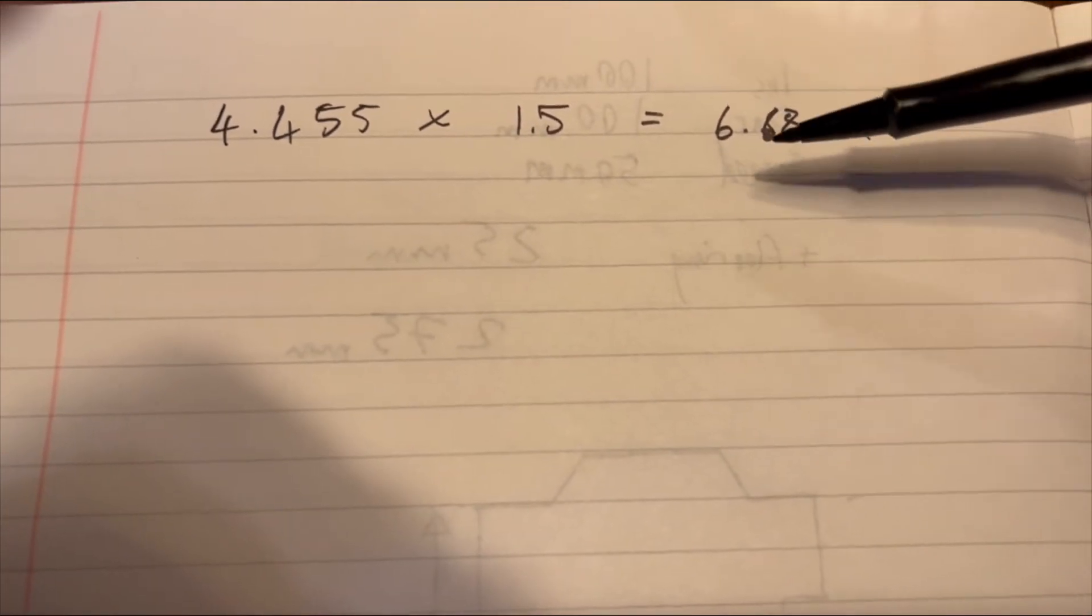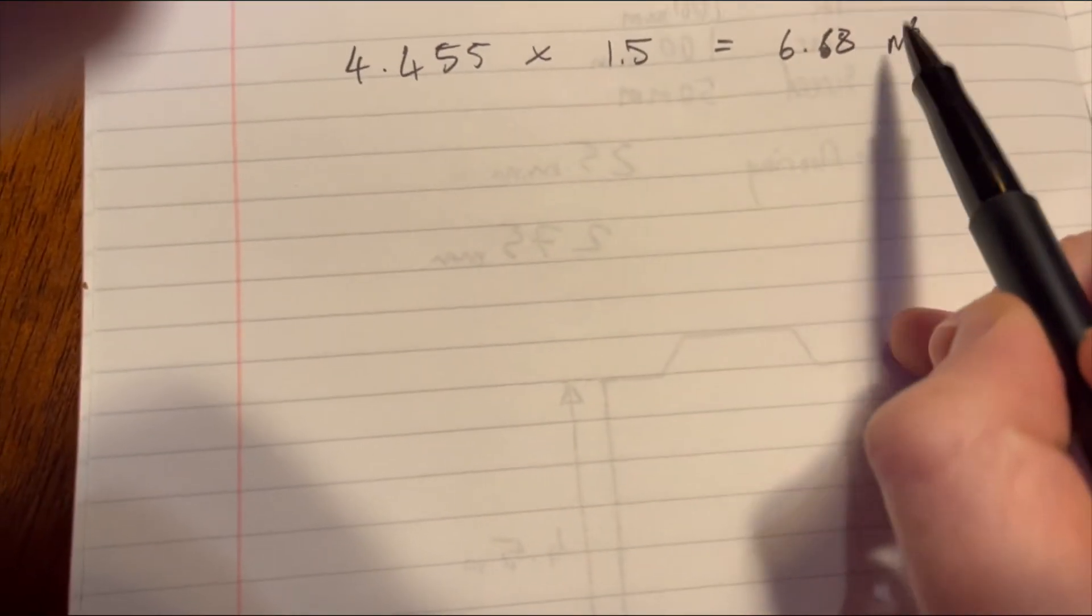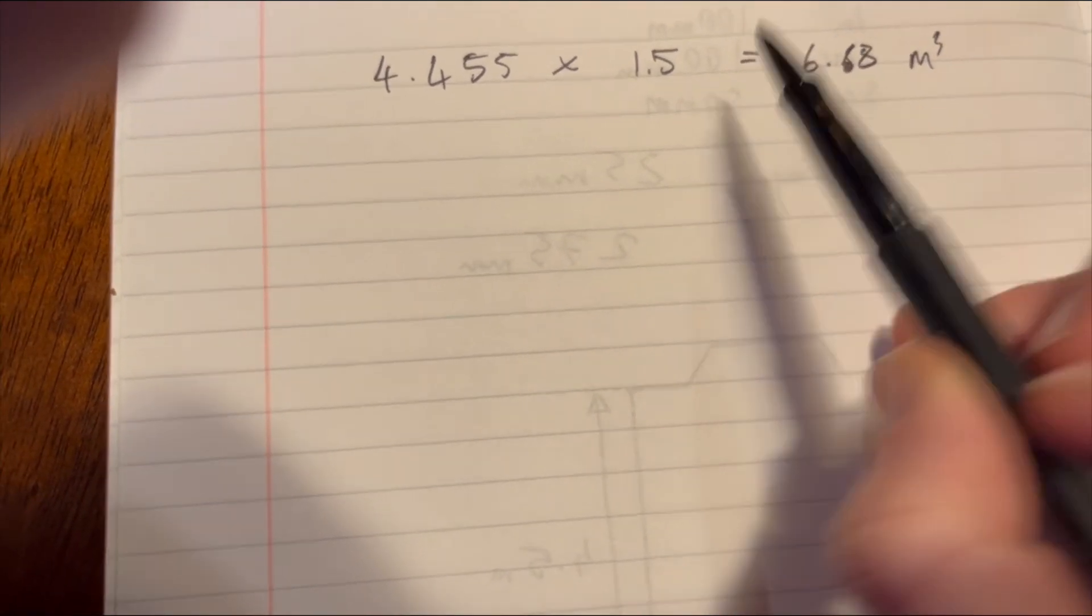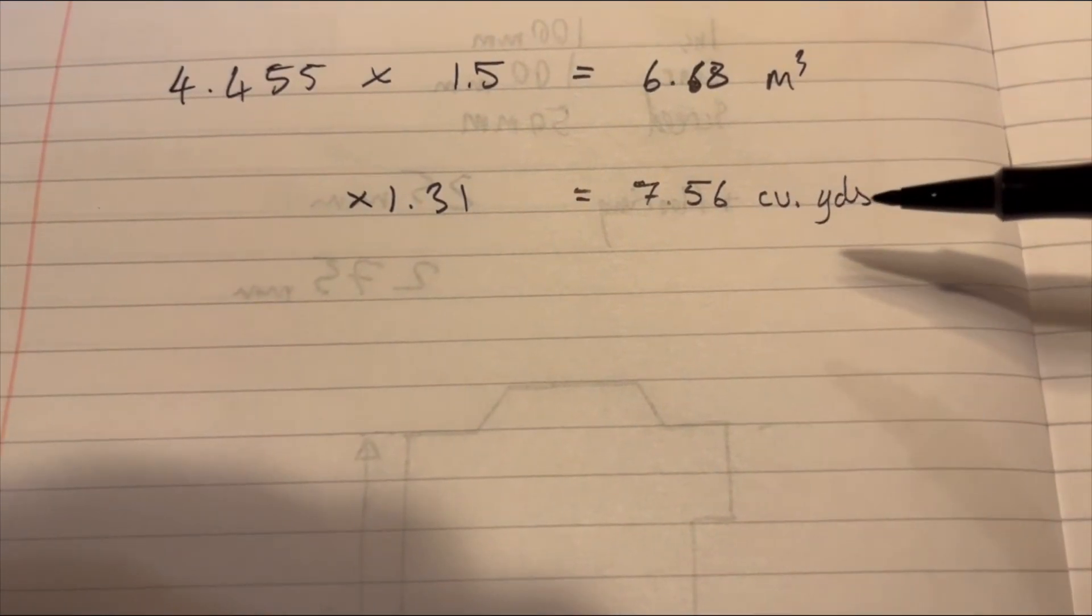So this might mean when we times it by 1.131, which is going to convert the meters cubed into cubic yards, it's going to give us 7.56 cubic yards.